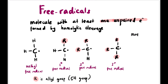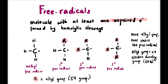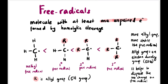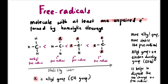The more alkyl groups, the more stable the free radical. This is because alkyl groups are electron-donating groups (EDG). The carbon dot is electron-deficient, so it has a somewhat positive charge. The EDG donates electrons toward the carbon dot, helping to disperse the positive charge, making the free radical more stable.